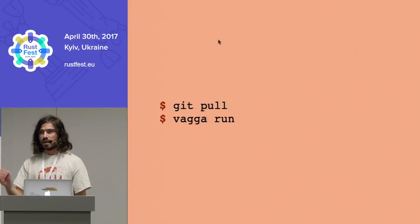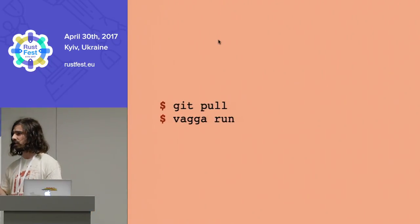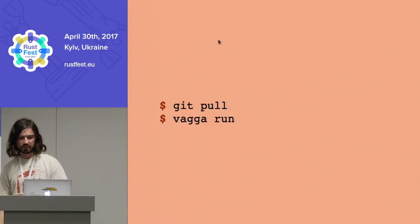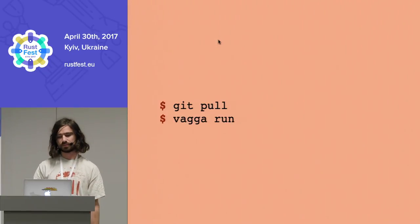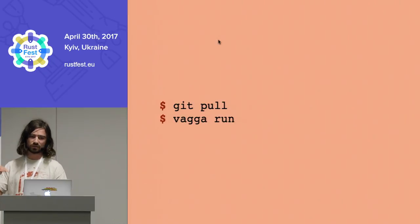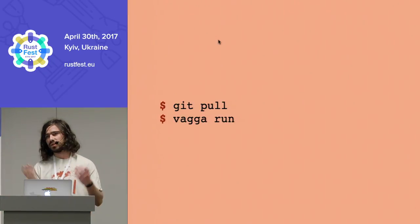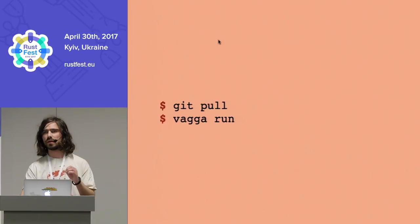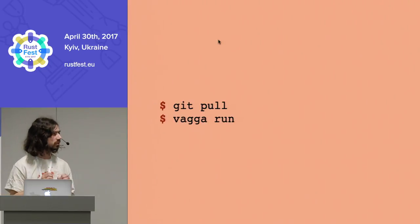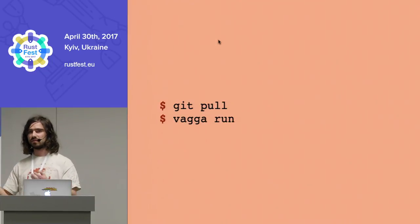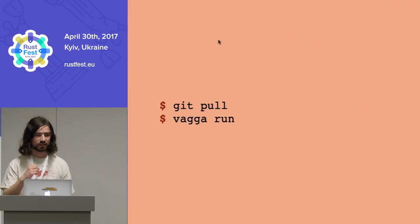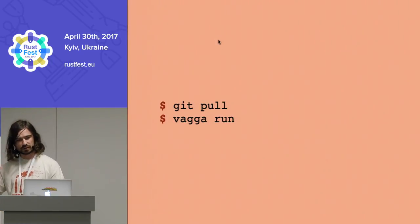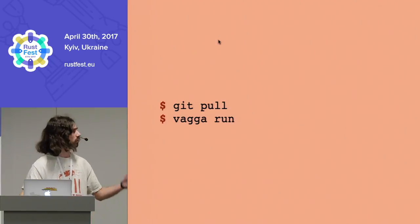You just type, for example, vaga build and it works. Even more, if you do git pull and some configuration changes — like you added a new dependency to package.json or to Python's requirements.txt, or you changed the nginx config — you just type vaga run and everything that needs to be rebuilt is rebuilt. Everything that doesn't change just runs as is. When dependencies of the container change, not your actual code, vaga just rebuilds the containers which need to be rebuilt.